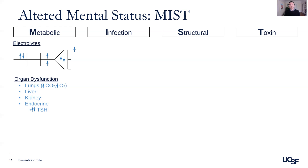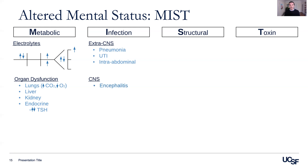Within the infectious category, we can think about infections outside of the CNS, like pneumonias, urinary tract infections, or intra-abdominal infections, as well as those within the CNS, like an encephalitis or a meningoencephalitis.